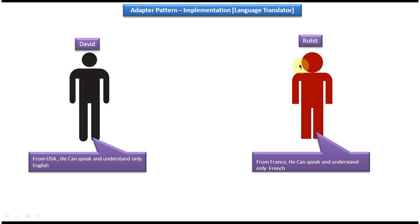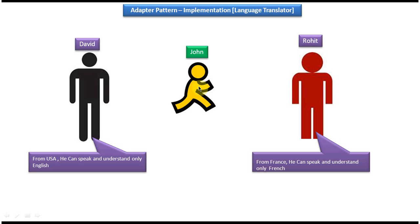So how to solve this problem? What we have to do is introduce a translator in between David and Rohit. Here John is the translator. John knows English — he can understand and speak English, and he can also translate English to French. Like that, John also knows French — he can speak and understand French, and can translate French to English. So here John is nothing but an adapter.